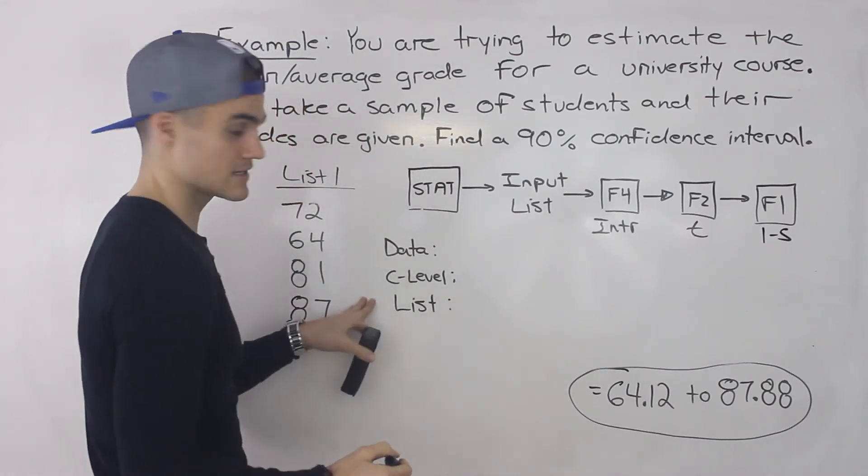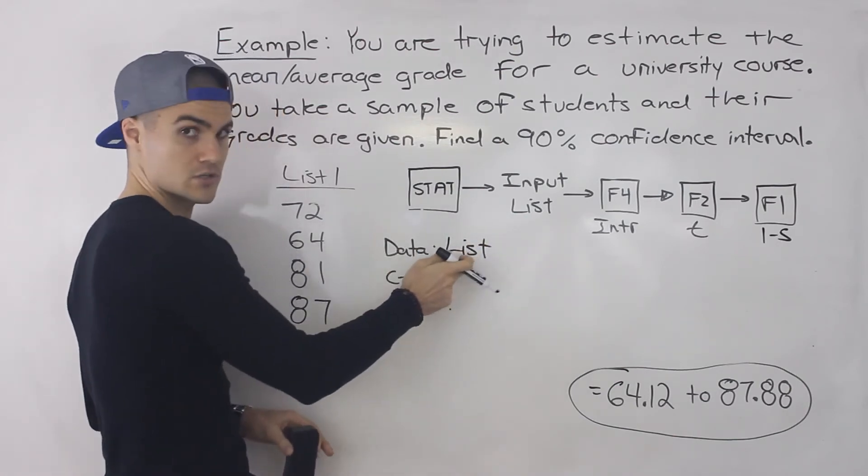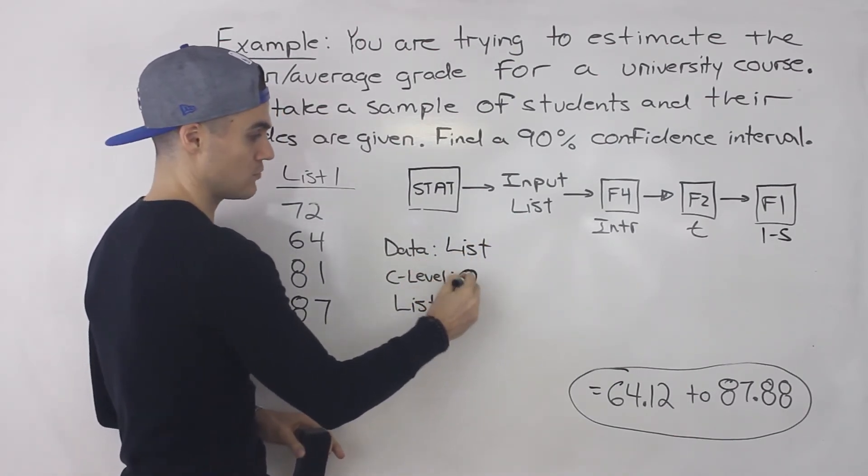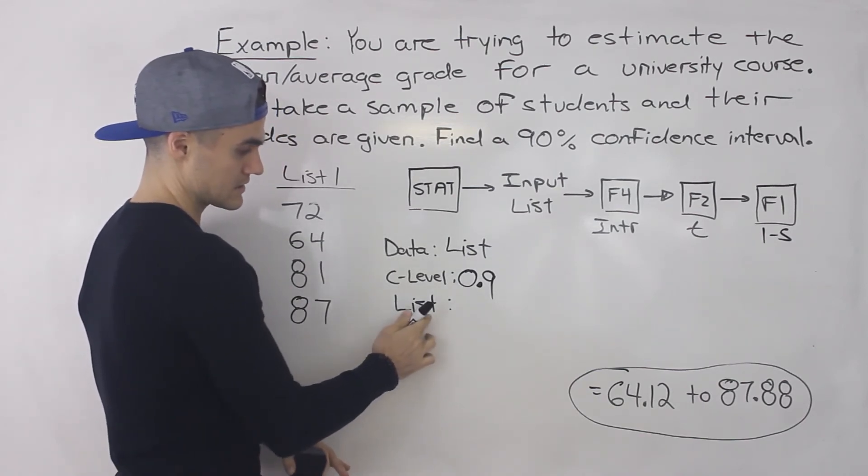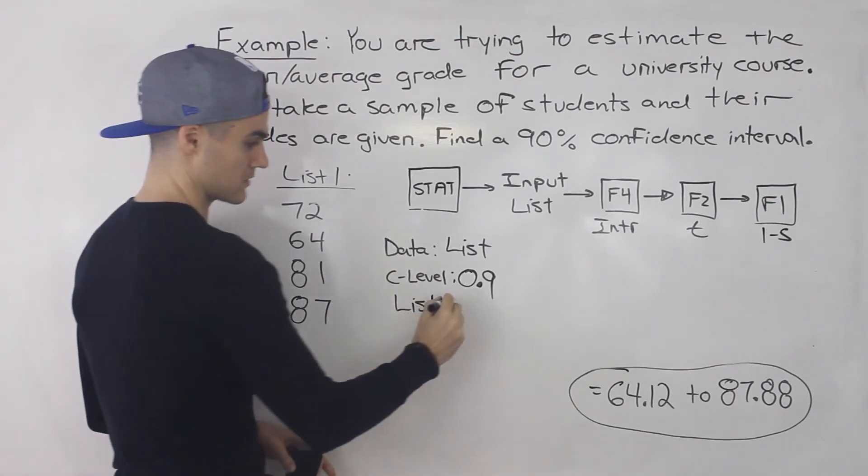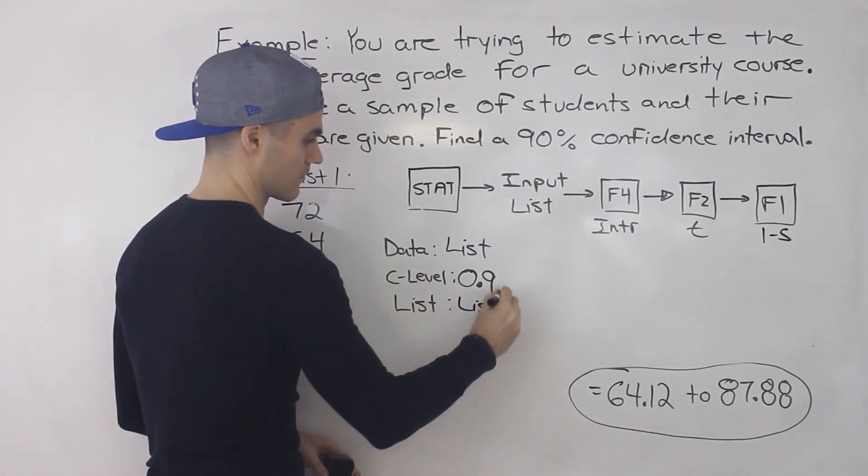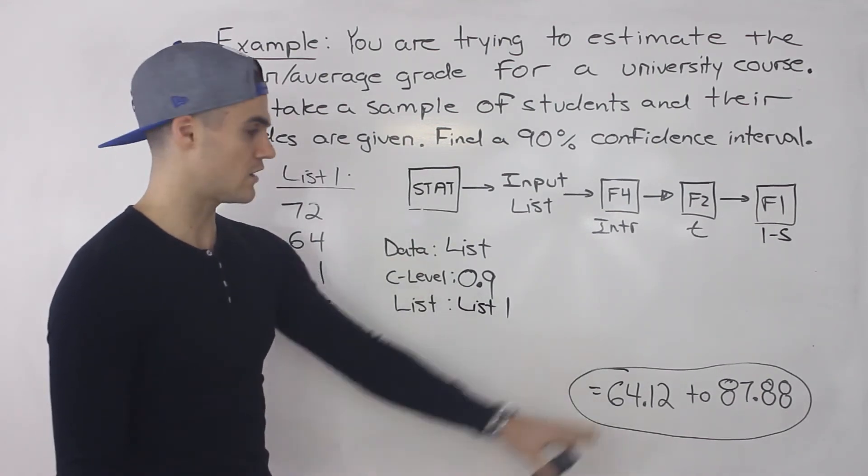And then you're going to get to this input screen here. So you're going to put list, right, instead of variable, make sure that this says list confidence level 0.9. And then you're going to have this list input and you could refer to list one if that's where you inputted these amounts. And so when you execute that, you should get this confidence interval.